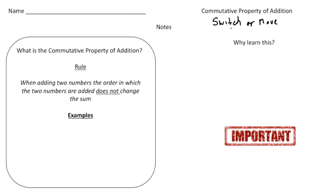The first type is the commutative property of addition, and here's the rule: if two numbers are added, the order does not change the sum. Here's an example — let's say we have 6 plus 4. We know that 6 plus 4 equals 10. That's the same as if we switch the numbers around, which would be 4 plus 6.